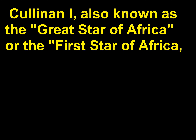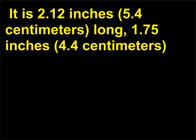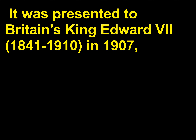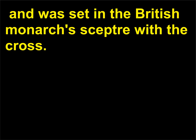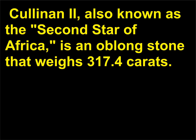Cullinan I, also known as the Great Star of Africa or the First Star of Africa, is a pear-shaped diamond weighing 530.2 carats. It is 2.12 inches (5.4 cm) long, 1.75 inches (4.4 cm) wide, and 1 inch (2.5 cm) thick at its deepest point. It was presented to Britain's King Edward VII (1841–1910) in 1907 and was set in the British monarch's scepter with the cross. It is still the largest cut diamond in the world. Cullinan II, also known as the Second Star of Africa, is an oblong stone weighing 317.4 carats and is set in the British imperial state crown.